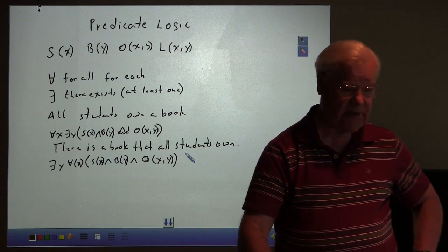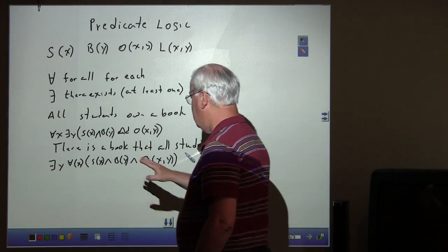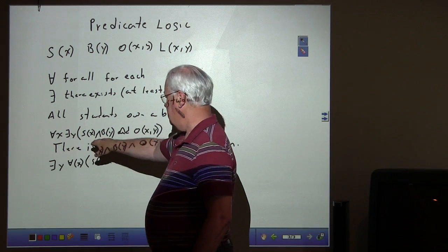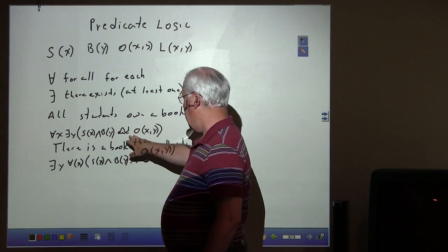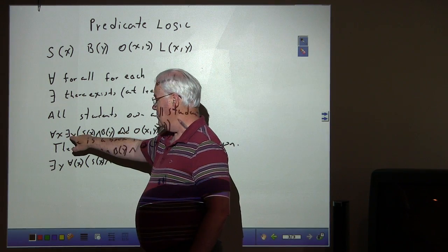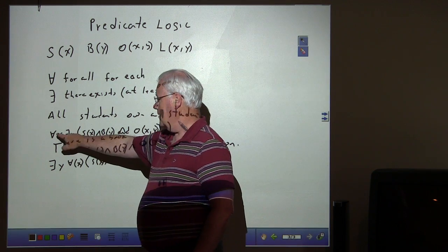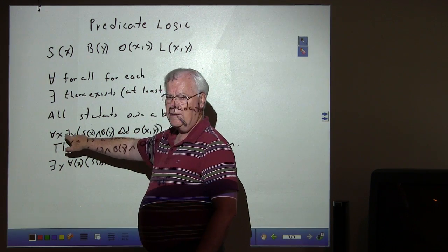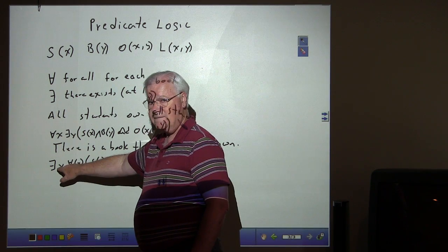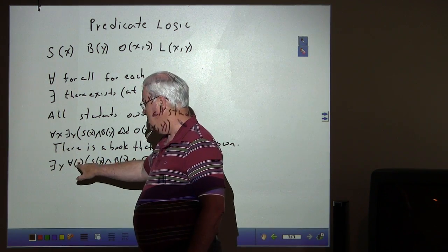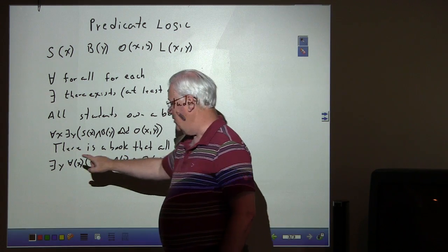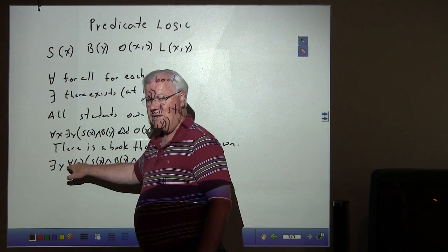So, now what we've done, the only difference between these two statements is that in the first one, we said we refer to all students first, then we said that there exists a book such that X is a student, Y is a book, and students own a book. Or, for each student there exists a book. And now you see where the for each kind of helps clarify it. If you said for each student there exists a book, then it doesn't say it's the same book for every student. But, down here, we say there exists at least one book and all students such that X is a student, Y is a book, and X owns Y. So, there exists at least one book that all students own.